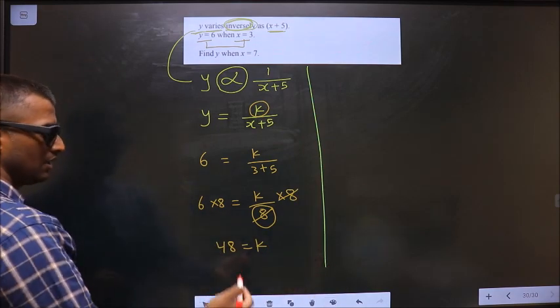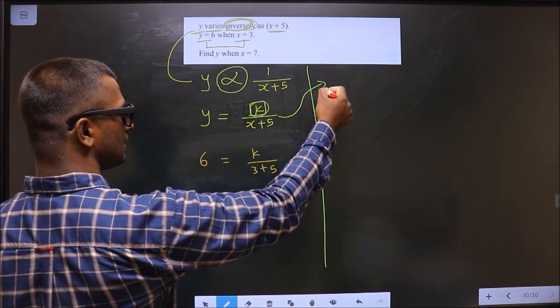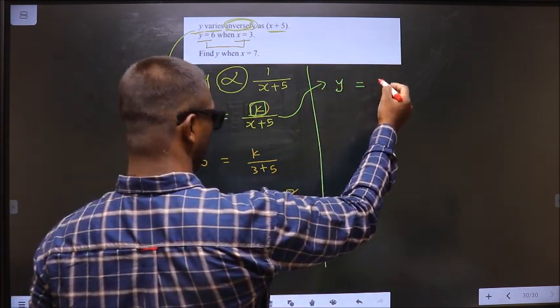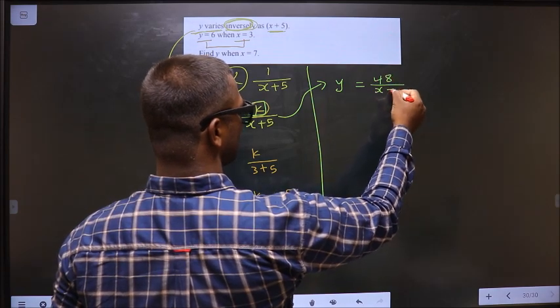Now replace k here. Then this equation becomes y equals 48 by x plus 5.